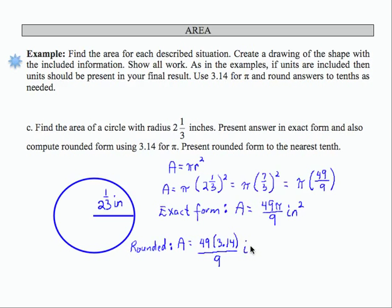And if I multiply the top and divide by 9 and round to the nearest tenth, which is what we are asked to do, I'm going to obtain a result of 17.1 inches squared. That is my rounded form for the area of this circle.